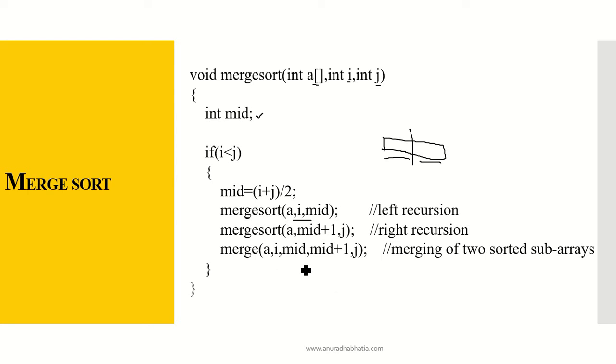Merge(A, i, mid, mid+1, j). This is merging two sorted subarrays. If this is sorted about itself and this is sorted among itself, then these two have to be merged using the merge function.